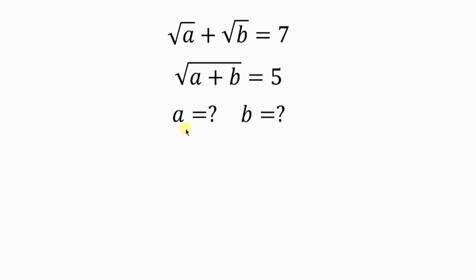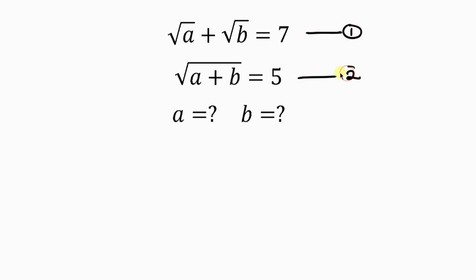Let's find the values of A and B, given that the square root of A plus the square root of B is equal to 7, and the square root of A plus B is equal to 5. We can call this equation 1 and call this equation 2.